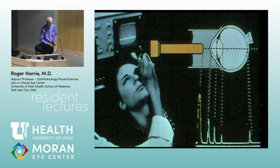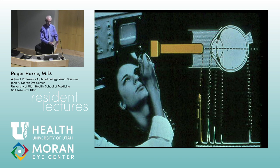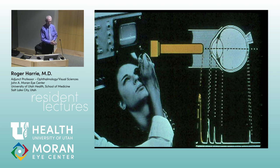For biometric axial length, we use immersion techniques so we can see the front structures of the eye. If you put the probe right against the cornea you lose information — you can't see the cornea, anterior chamber, or anterior lens. With an immersion shell, you get the probe spike, then cornea, anterior chamber, anterior lens, posterior lens, vitreous, and retina — you can measure front to back with electronic calipers. About 20% of the time, techs have to do immersion ultrasound instead of IOL Master.